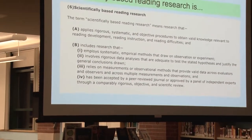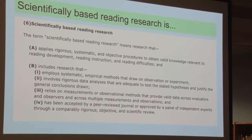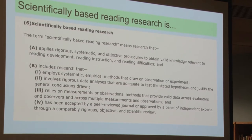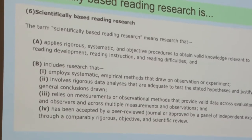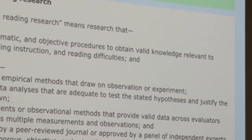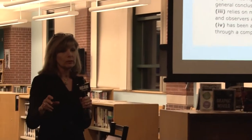One of the things we're doing in the district is approaching this with a really specific lens. When we look at what we mean by scientifically based reading research, part A applies rigorous, systematic, and objective procedures to obtain valid knowledge relevant to reading development, reading instruction, and reading difficulties. We're asking: what do we know about reading instruction? What do we know about when a kid is struggling to read? What interventions are available? Is it working? How much longer should we try before we abandon something and try something else?